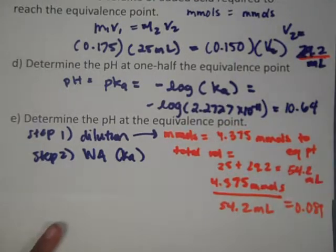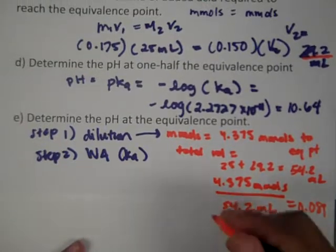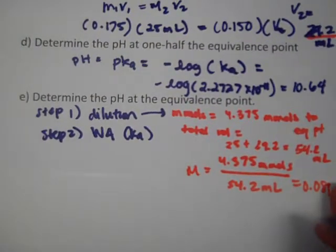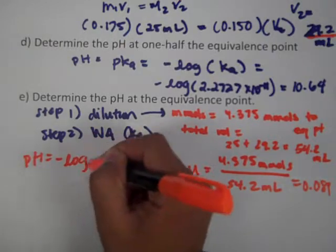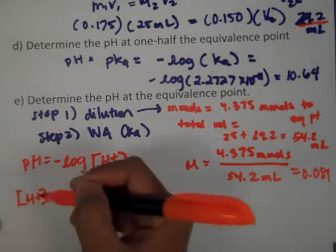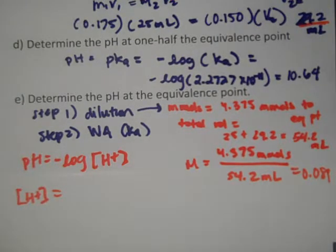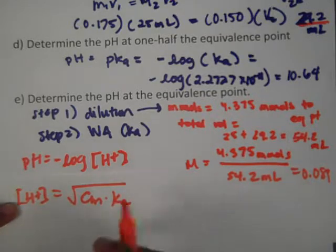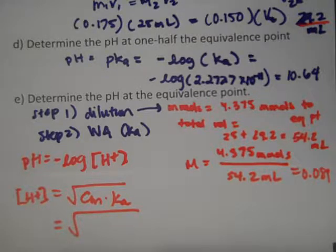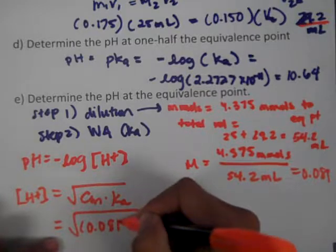We have a new molarity of 0.081 M. We take this as the concentration of the weak acid present and use the Ka formula to find pH. From the shortcut method and ice tables from last chapter, for a weak acid problem H⁺ equals the square root of concentration times Ka. We have both of those numbers.